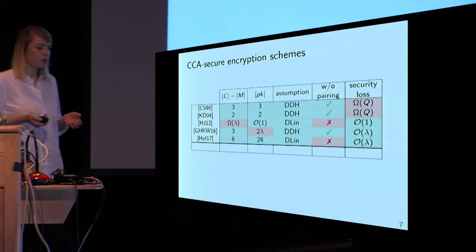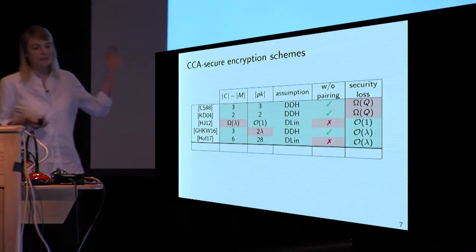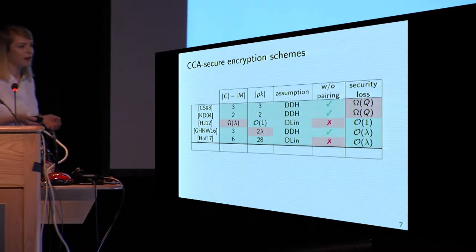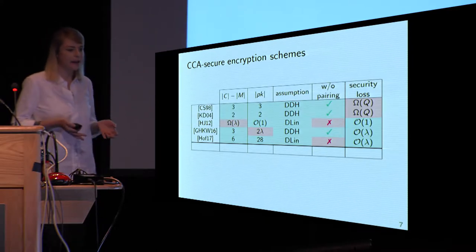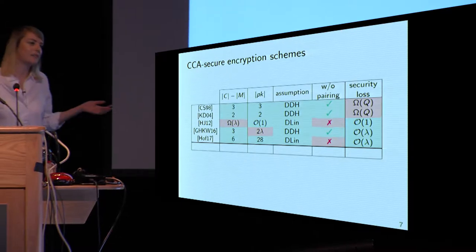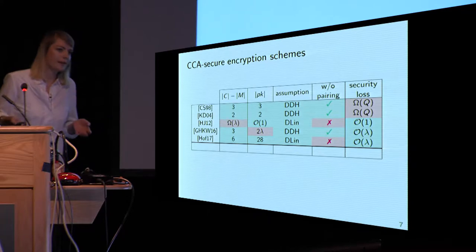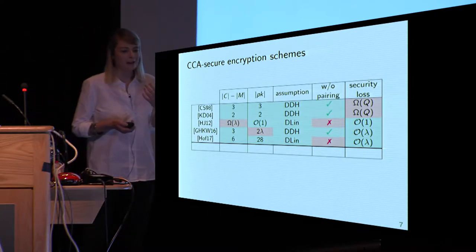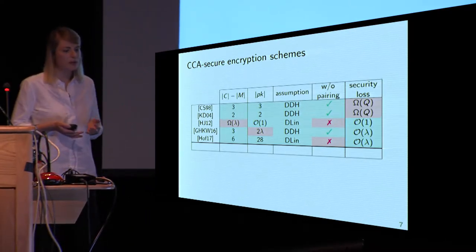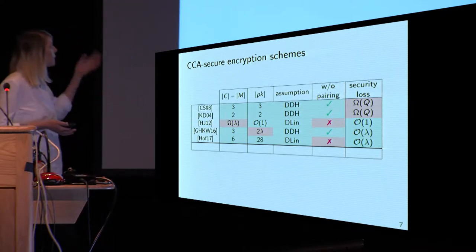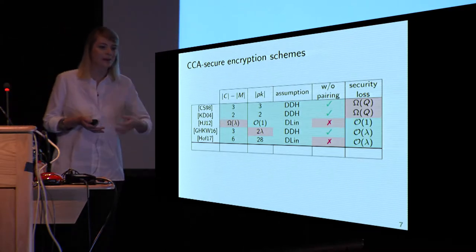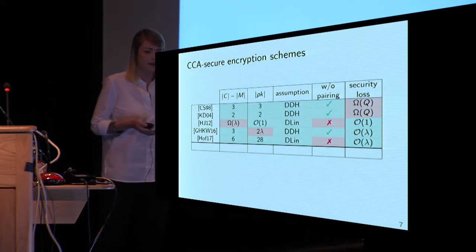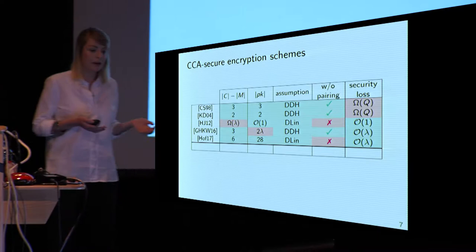I want to give you a short walk through some CCA-secure encryption schemes in the line of our work. Starting with Cramer-Shoup 1998 and Kurosawa-Desmet 2004, you can see two very efficient schemes in terms of ciphertext and public key, but with a security loss in omega of the number of encryption queries. Starting with the work of Hofheinz and Jager 2012, there was an aim to get tight-security-reduction CCA-secure encryption. But the first scheme has a ciphertext size linear in the security parameter instead of two group elements before — so it's really inefficient. There was a lot of progress made very recently.